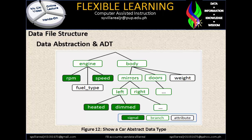Data abstraction and ADT — Figure 12 shows a car abstract data type. You will notice there is what is called the 'user' here. It goes to engine and the body itself. Under the body, there is a mirror, a door, and weight. Under mirror, there is left and right, which can be automatically used — left has heated and dim options, and right similarly. We also have signal, branch, and attributes. Under engine, we have RPM (revolution per minute), speed or speedometer, and fuel type. All of this is hidden from the user — that is the part of data abstraction.